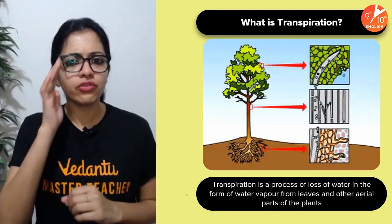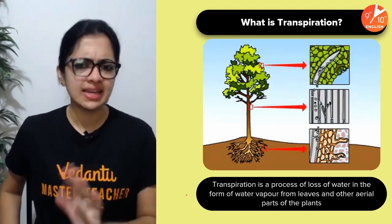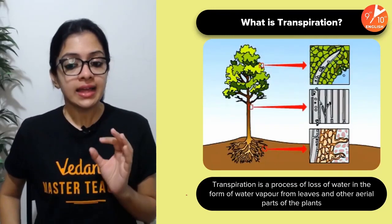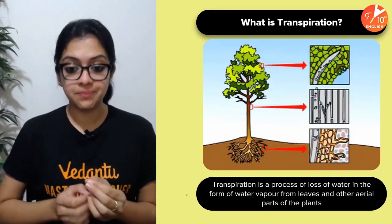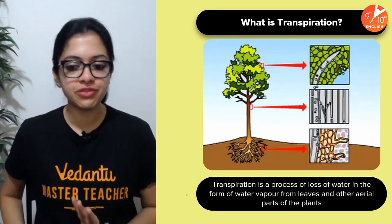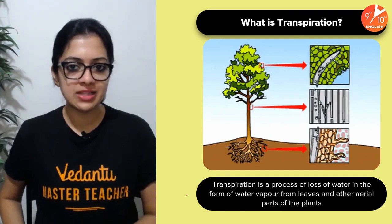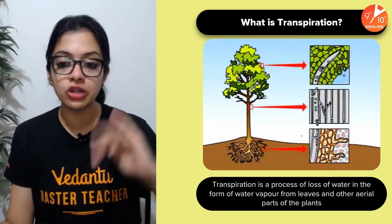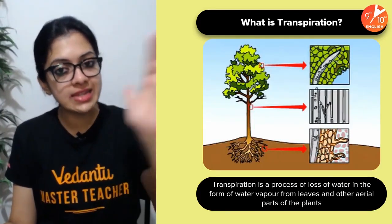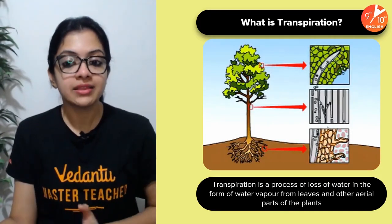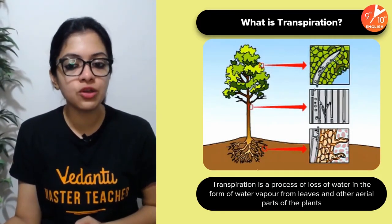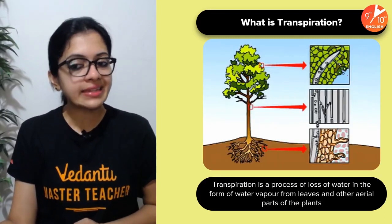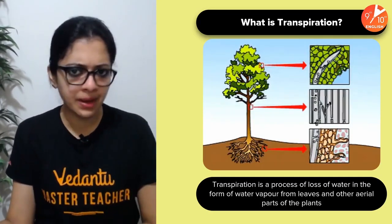Starting off, transpiration is the process of loss of water in the form of vapor from the aerial parts of a plant — the leaves and other aerial parts. As you can see in the zoomed-in view, the water column continuously moves as a result of transpirational pull, starting from the root hairs, moving upward through the xylem, and ultimately leaving through the stomata or other parts.